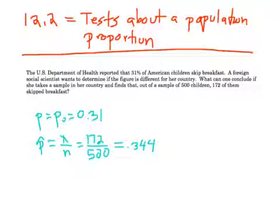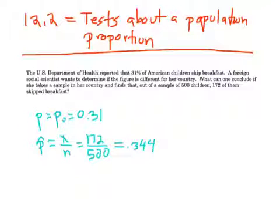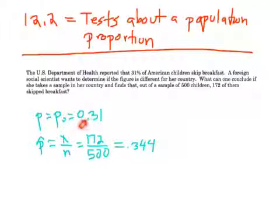I wanted to use that language because every single one we've seen so far has used phrases like 'is there evidence' or something like that. This language also suggests you should do a hypothesis test. I'm going to introduce a new term: P sub zero, because we're starting to have too many P's. P sub zero is the P of your null hypothesis — a fancy way of saying the P in your null hypothesis is 31%, which is what we think is true.